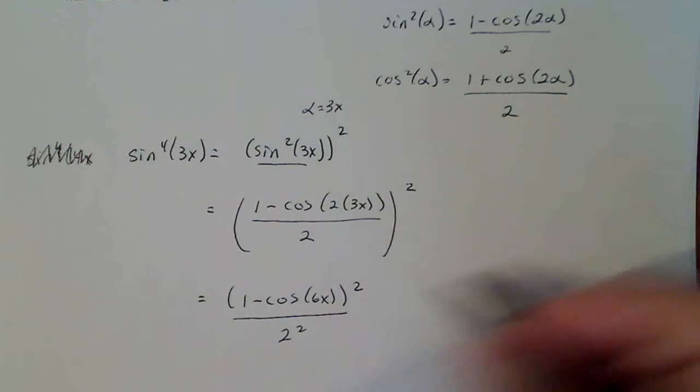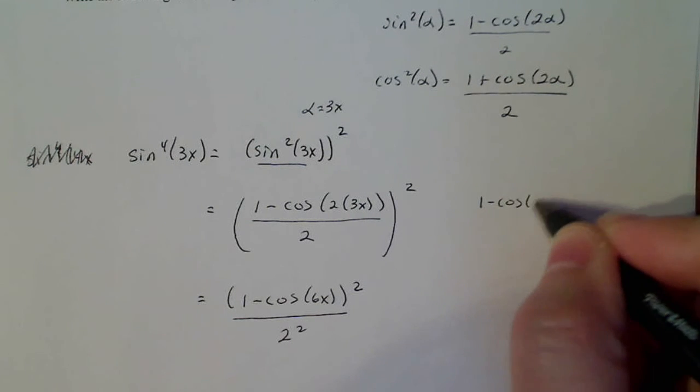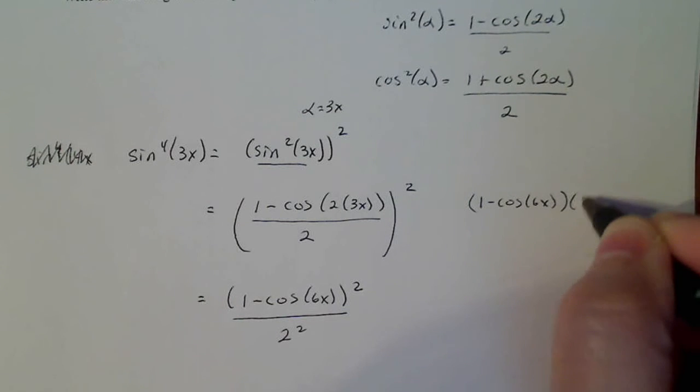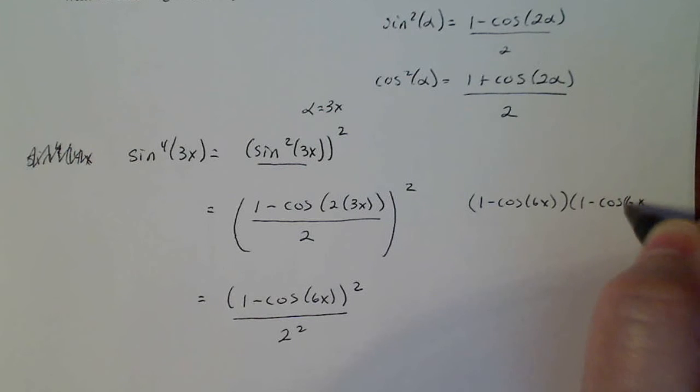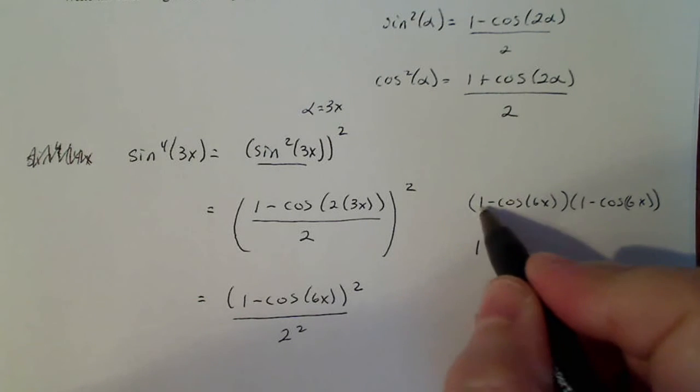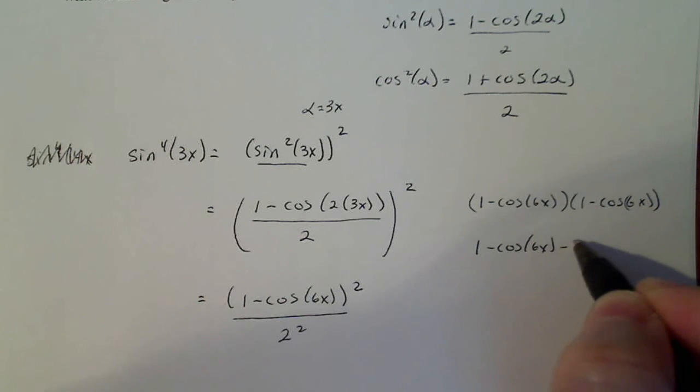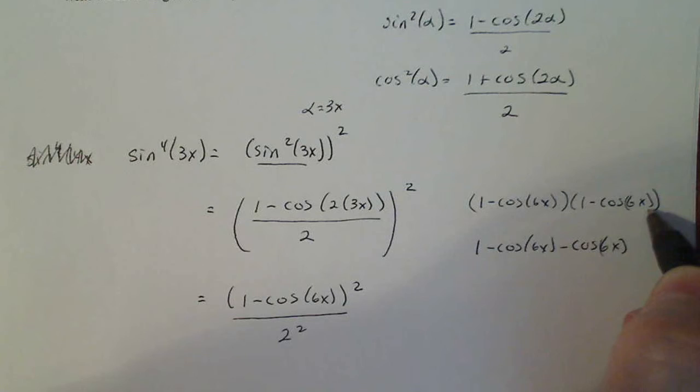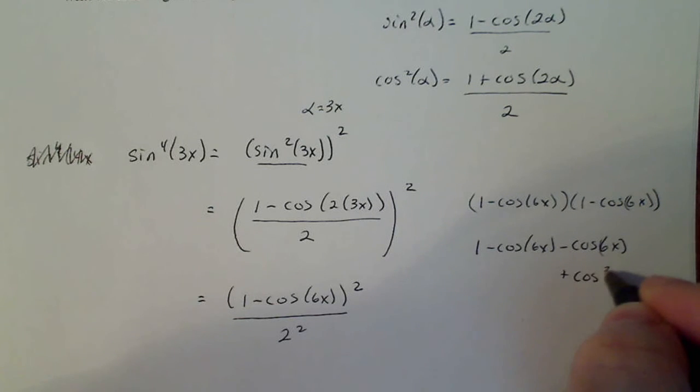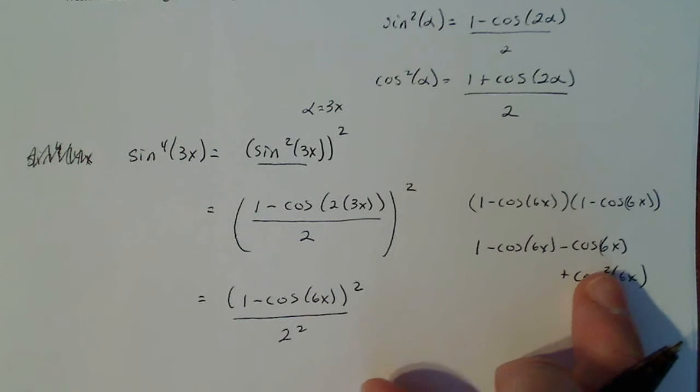I want to multiply out the numerator here. So I'm going to come off to the side. I'm going to write 1 minus cosine 6x times 1 minus cosine 6x and FOIL. So 1 times 1, 1 times negative cosine 6x, 1 times negative cosine 6x, and then cosine 6x times cosine 6x is positive cosine squared 6x.